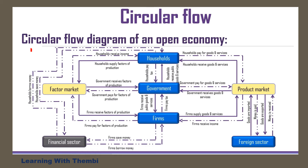Just to refresh memories, let us look at the circular flow diagram so that we can identify the real flows and money flows. If you can check from households, we've got an arrow moving from households to the factor market, then to the government, and that arrow is a solid line. It's showing the movement of factors of production via the factor market to the government. We also have a similar line from households to the firms via the factor market, wherein households are selling their factors of production to firms. That movement of factors of production from households to firms is the real flow.